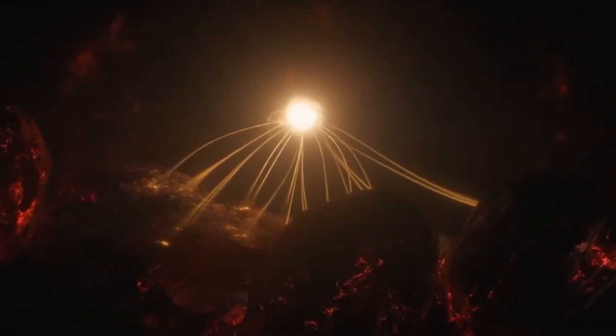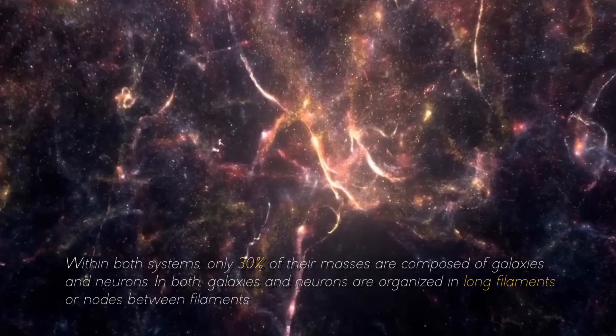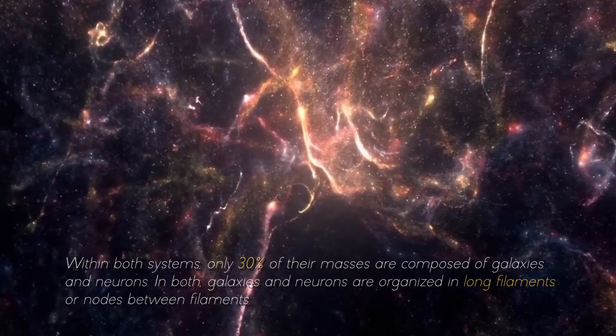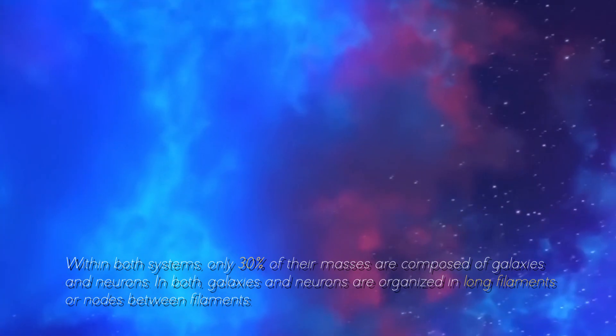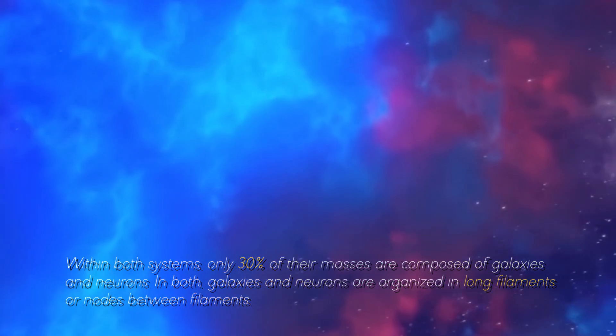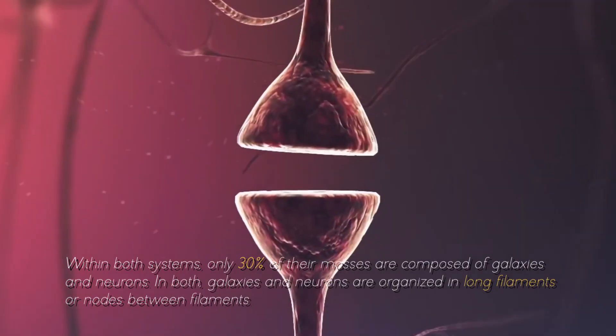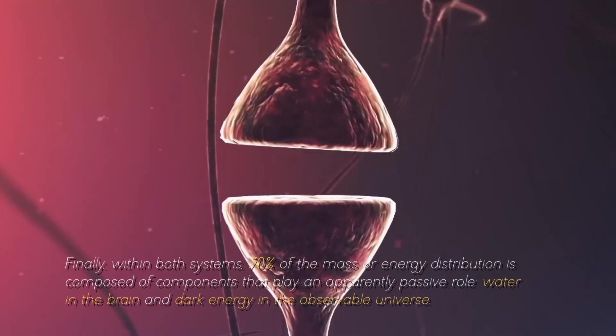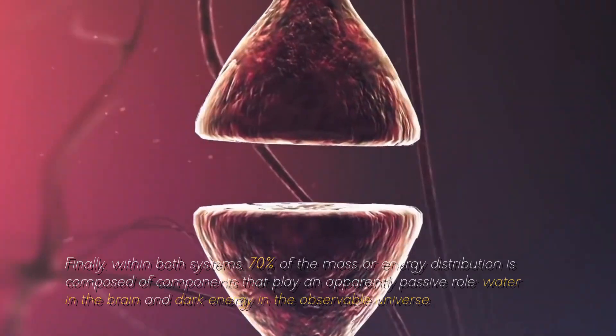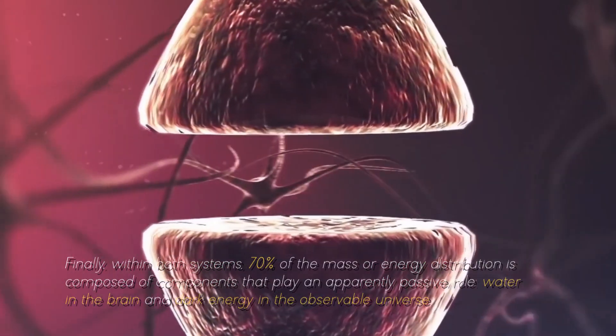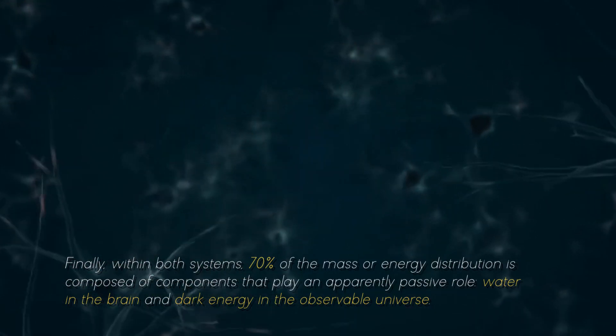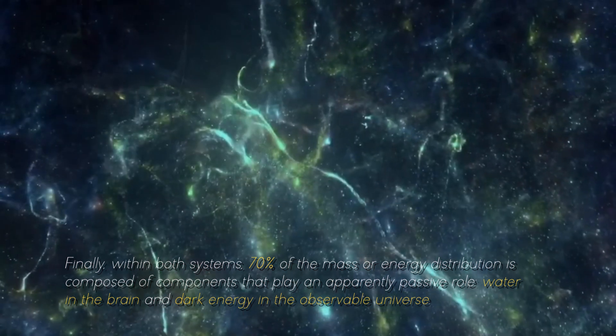Thus, it is not that our brain is like a universe, or that the universe is a brain of titanic proportions, but that their dynamics are similar. Within both systems, only 30% of the masses are composed of galaxies and neurons. In both, galaxies and neurons are organized in long filaments and nodes between filaments. Finally, within both systems, 70% of the mass or energy distribution is composed of components that play an apparently passive role,